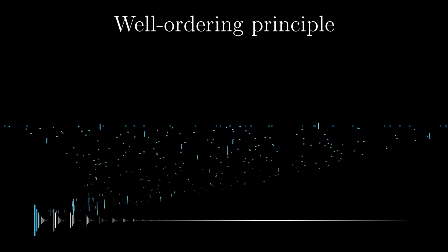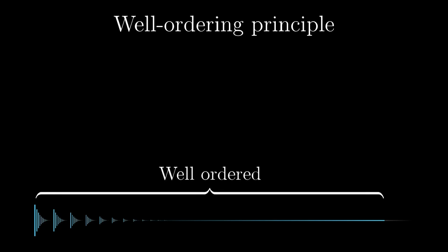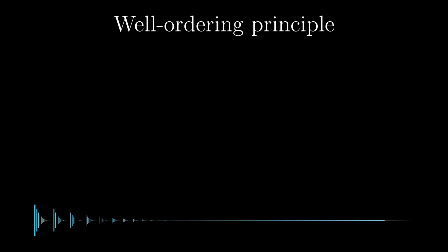We cannot run out of ordinal numbers since it is impossible to cover all ordinal numbers with a set. This means we eventually run out of real numbers, and since we have reordered them to ordinal numbers, we have a well-order on them. From this point of view the well-ordering principle looks trivial, but it is also a pretty strong statement.